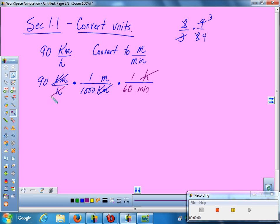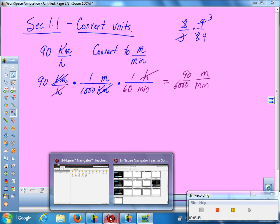And so my hours have now canceled. The conversion is done. What units are left? We've got meters over minutes left, which is what we wanted. And then you just need to multiply all the numbers on the top and multiply all the numbers on the bottom. You have 90 over 6,000. And I need to get that reduced. How do I get that reduced? Put it in your calculator. 3 over 200. Thank you.